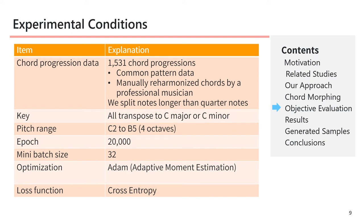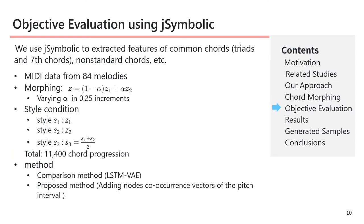Here are the experimental conditions. The chord progressions include common pattern data from music books and manually reharmonized chords by a professional musician. We split notes longer than quarter notes, and all music is transposed to C key. The morphed chord progressions were obtained by varying alpha in increments of 0.25 for song Z1 and the other style Z2.